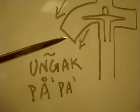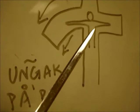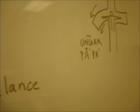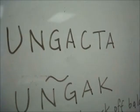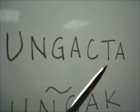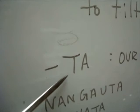Bend down, tilt down your branch, and I will hug and kiss Christ who is hanging on the cross. Ungakta — to tilt. And the last part of the surname is formed by the suffix Ta.